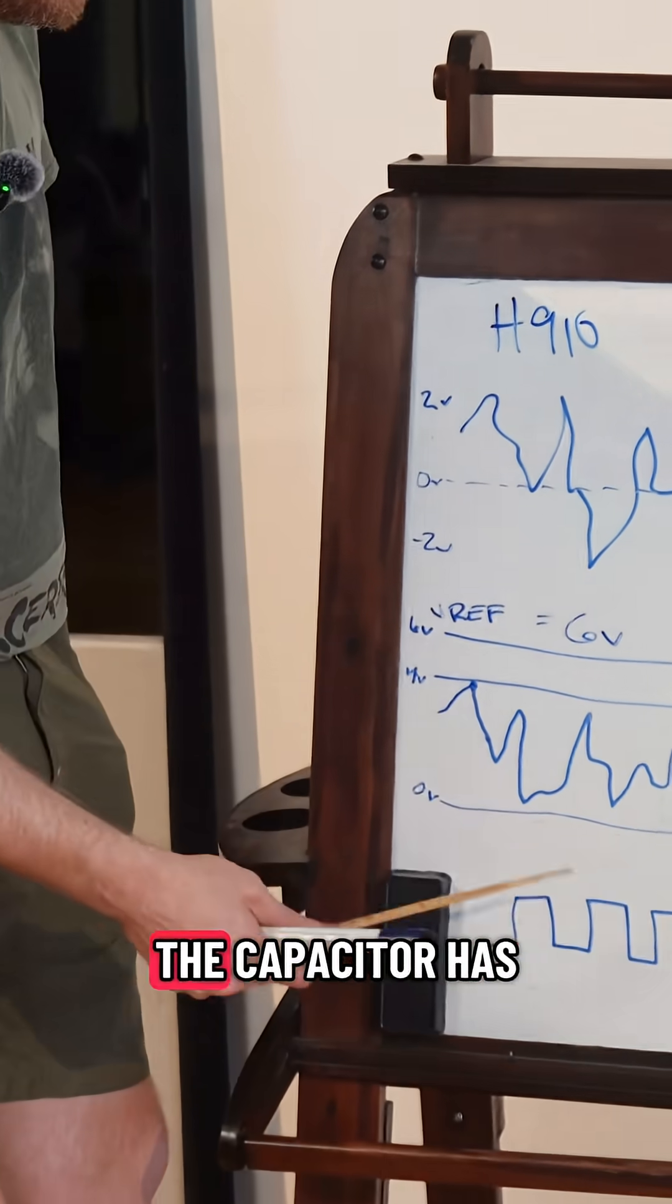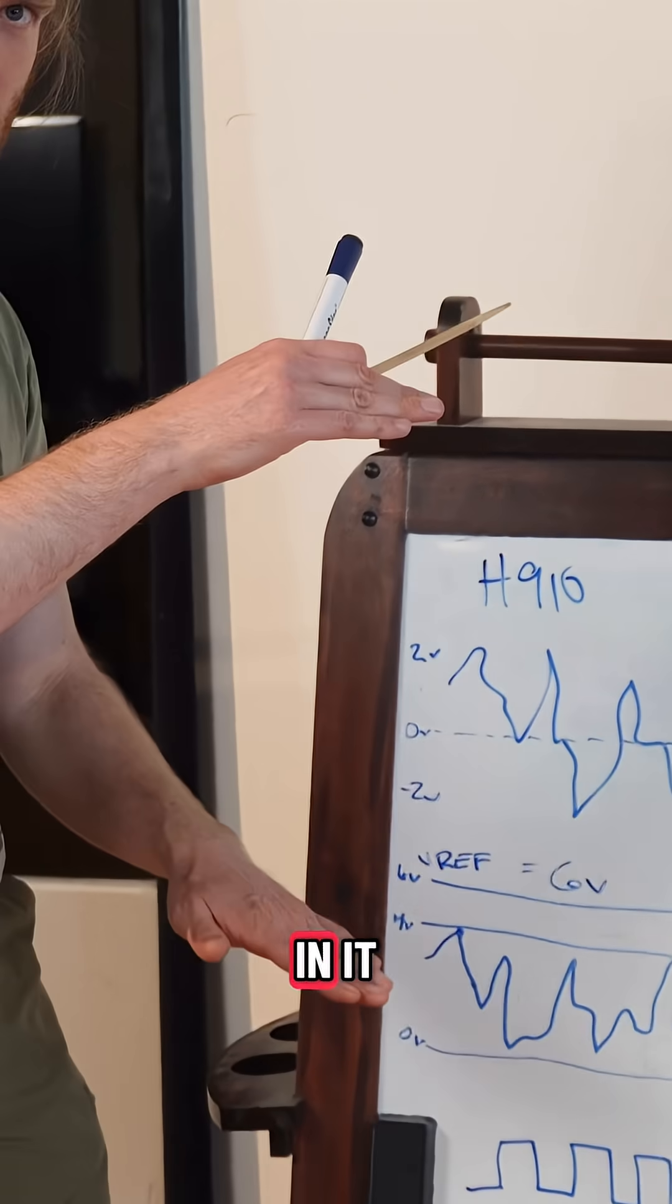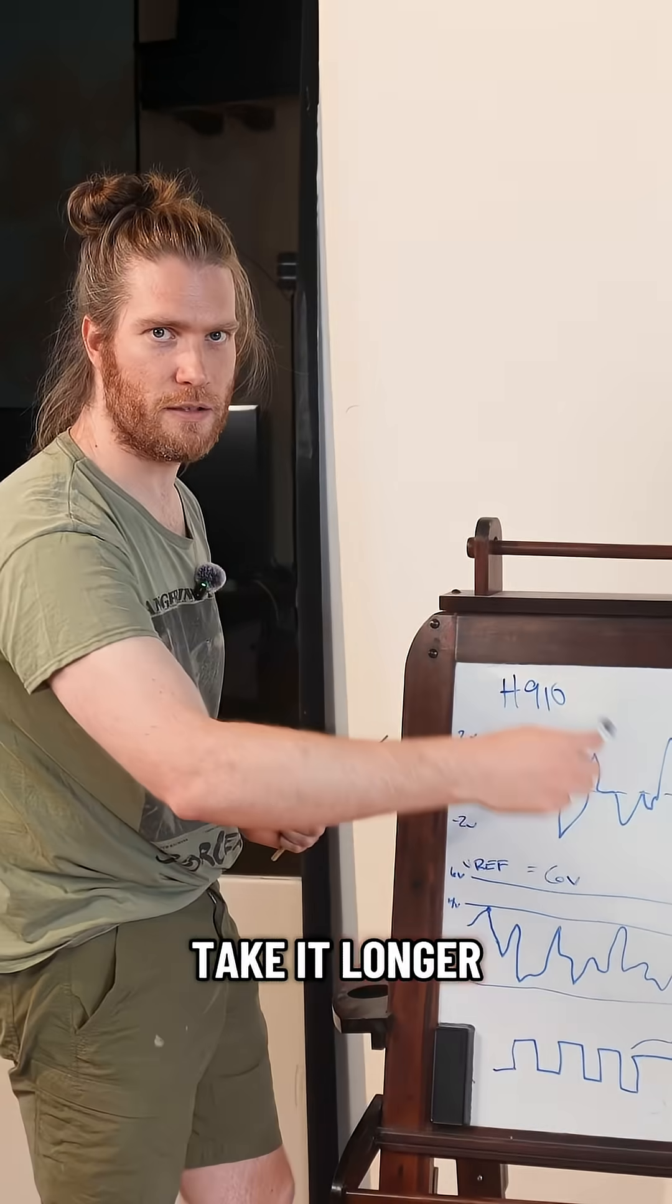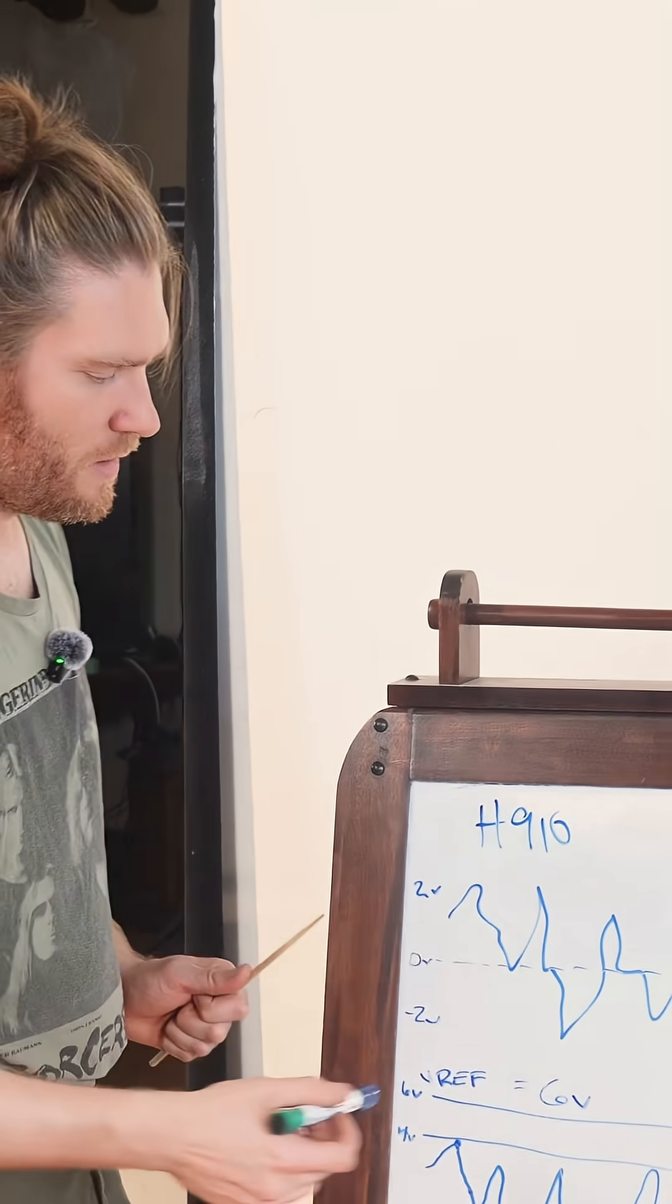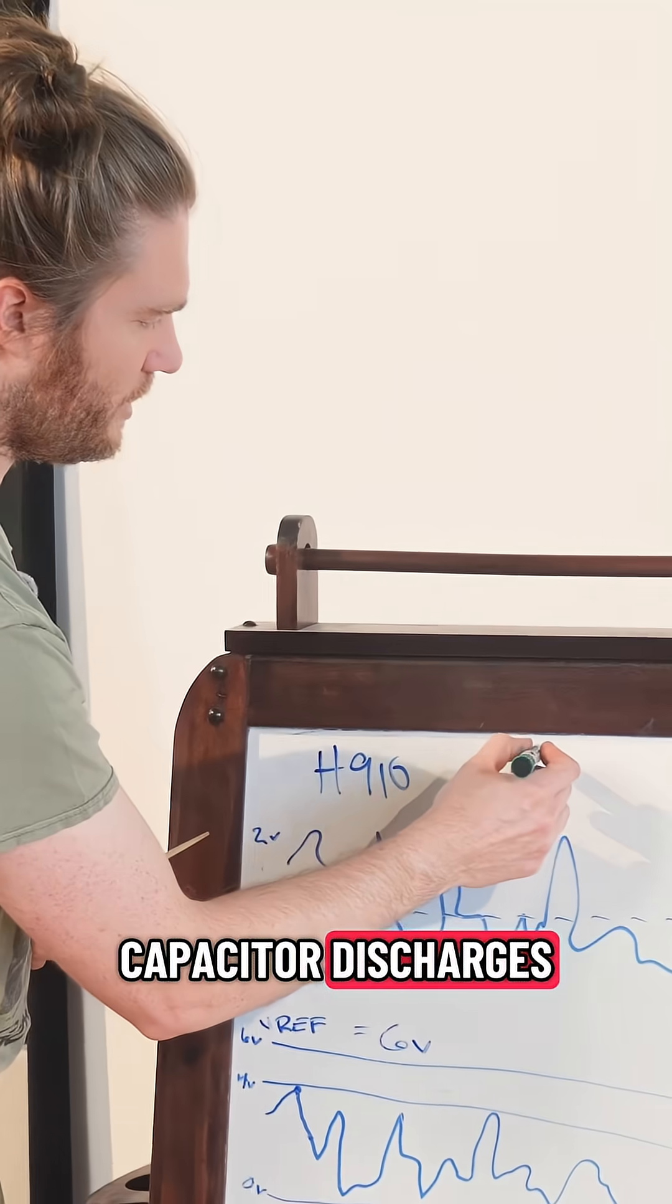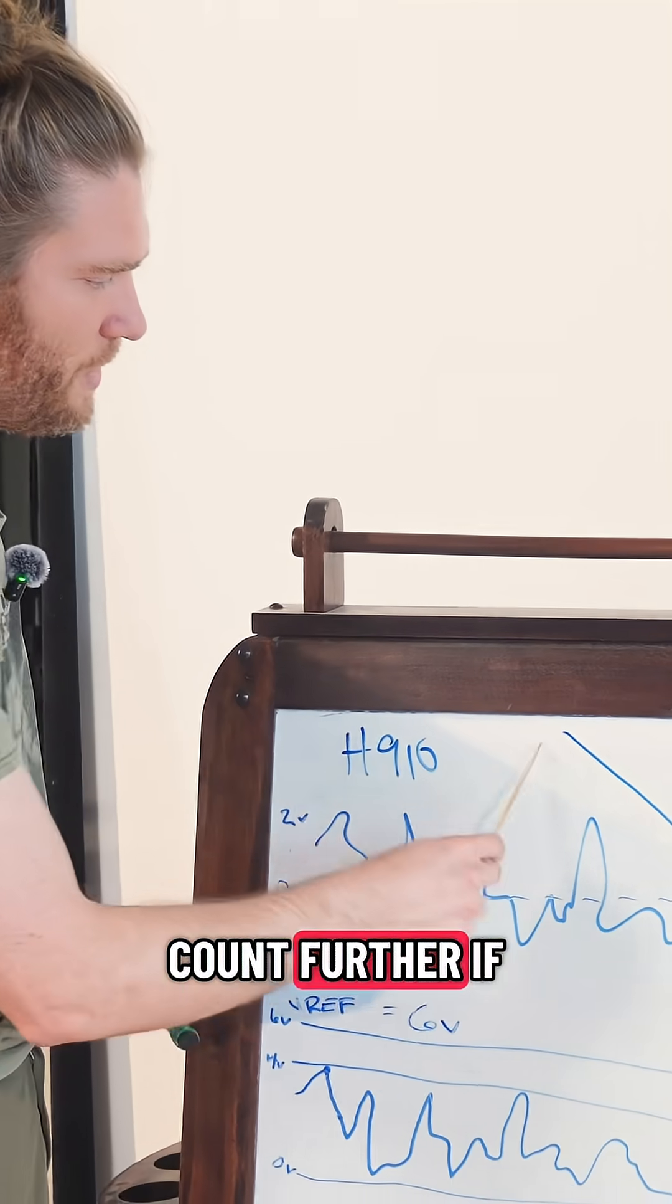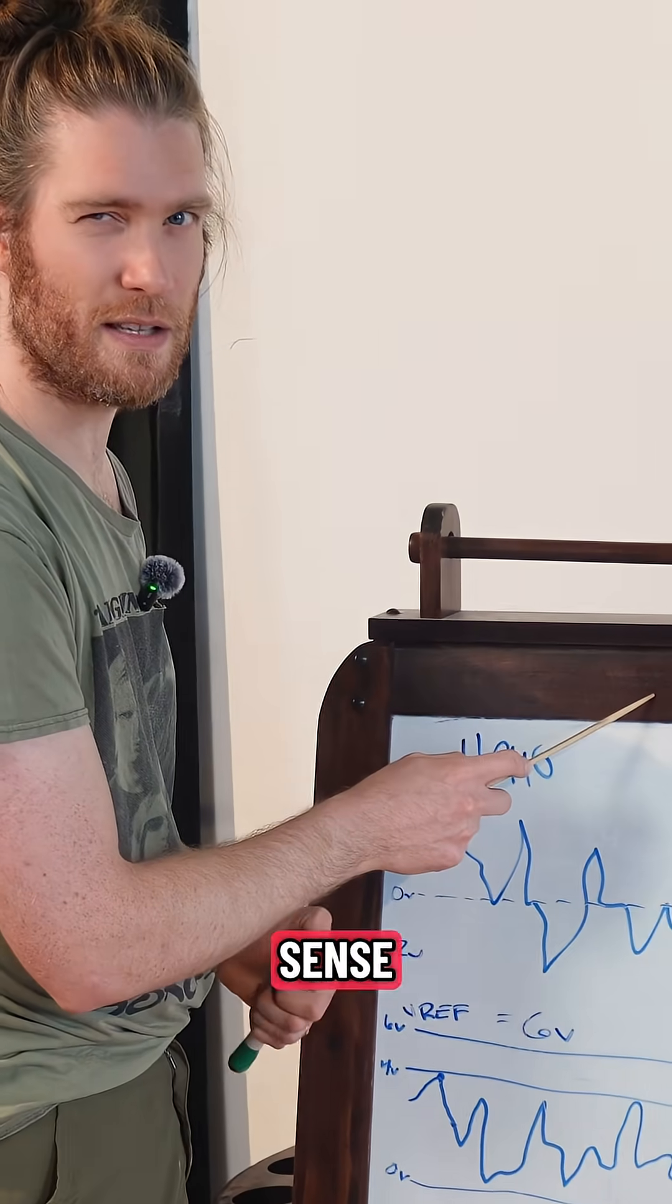And that's because the capacitor has a larger voltage in it, so it's going to take it longer to discharge. And it discharges linearly over time. So as the capacitor discharges, we're able to count further if we start from a higher voltage. That makes sense?